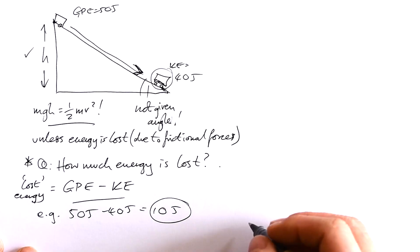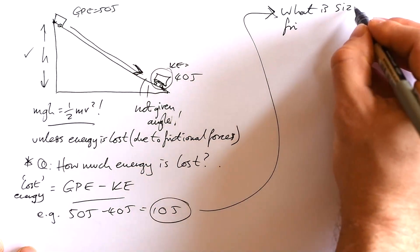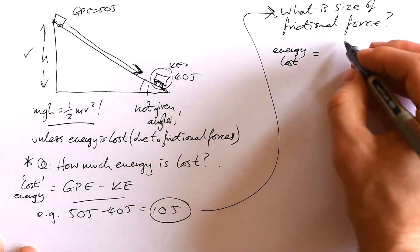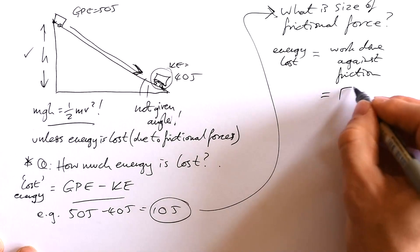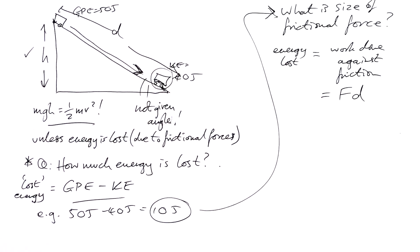Now, this probably is for A-level people. What you could get asked then is, what is the size of frictional force? Well, we know that this energy lost is going to be the same as work done against friction. So we can say that's equal to F times D, where D is the actual length of the ramp.